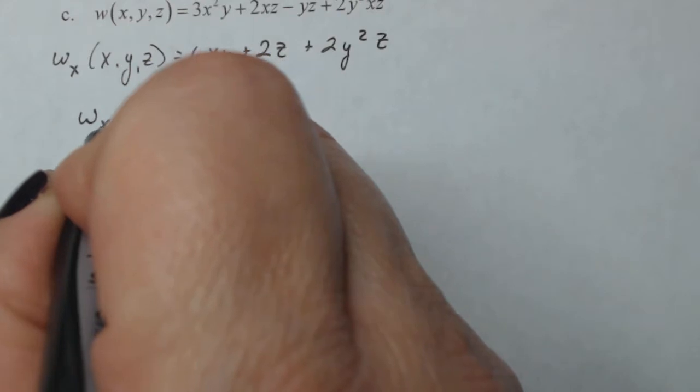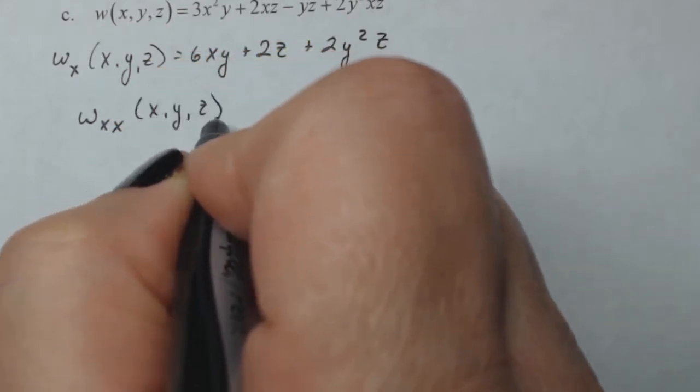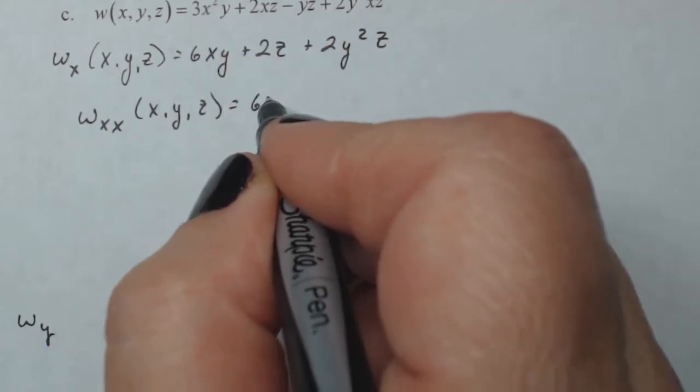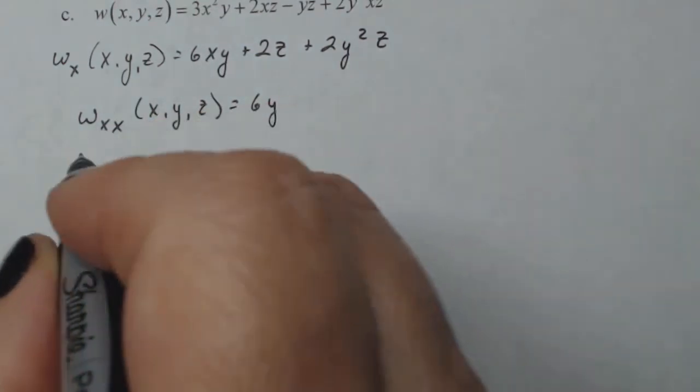Now, if I do W sub X X. Here, I take the derivative of this with respect to X, which is six Y. Nothing else has an X in it. So it's just six Y.